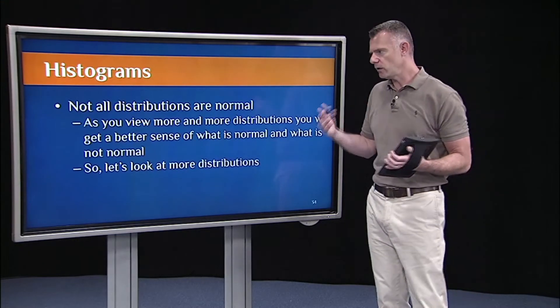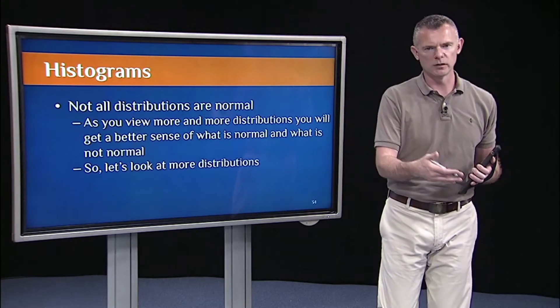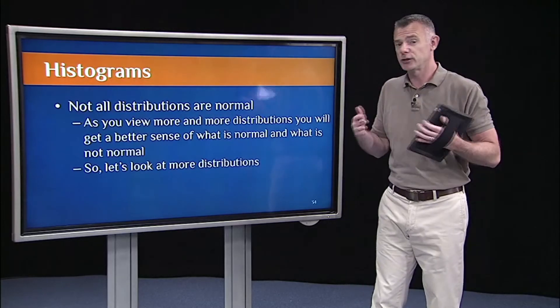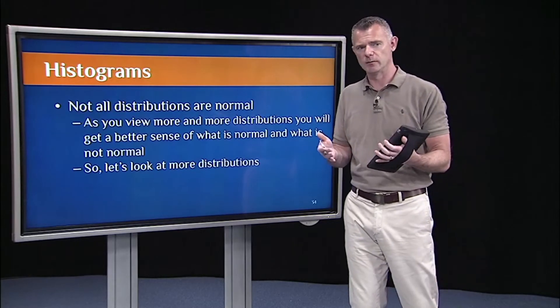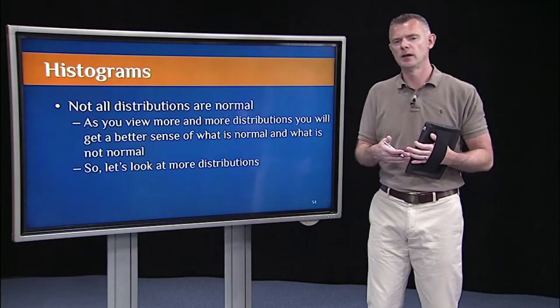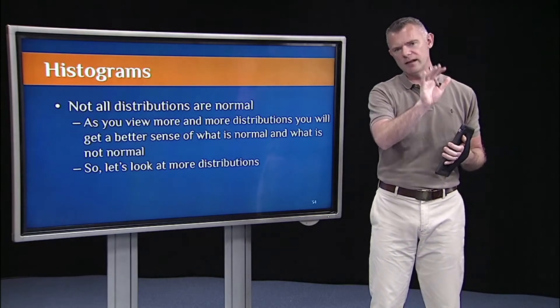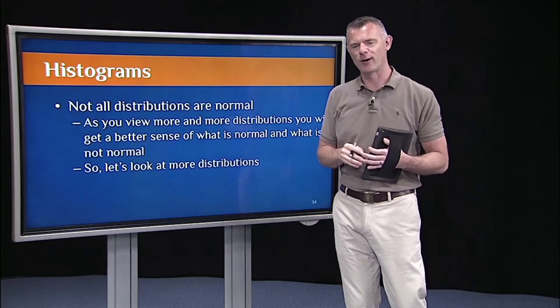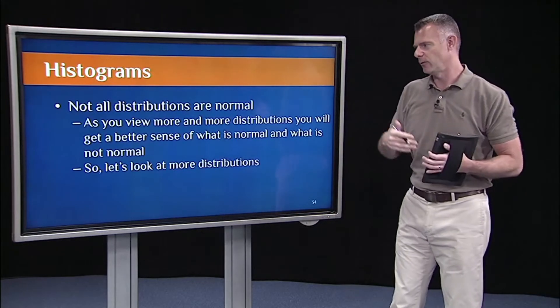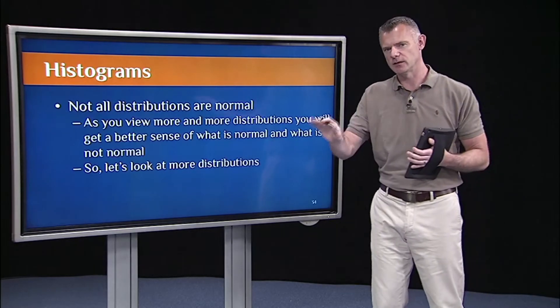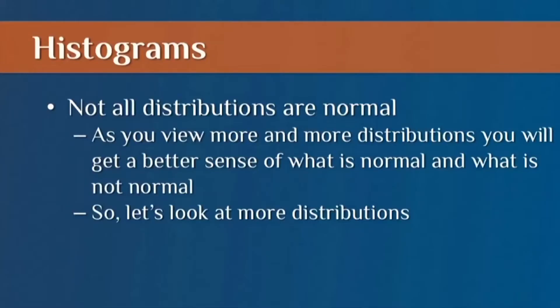So the only way to really get a good handle on what does a normal distribution look like and what does a non-normal distribution look like is just to look at more and more histograms. The more experience you get with this, the more you'll be able to say, ah, yeah, that's normal enough for our statistical procedure. We'll go ahead. Or that's too positively skewed. That's too negatively skewed. So the best way to do that is just to get experience.